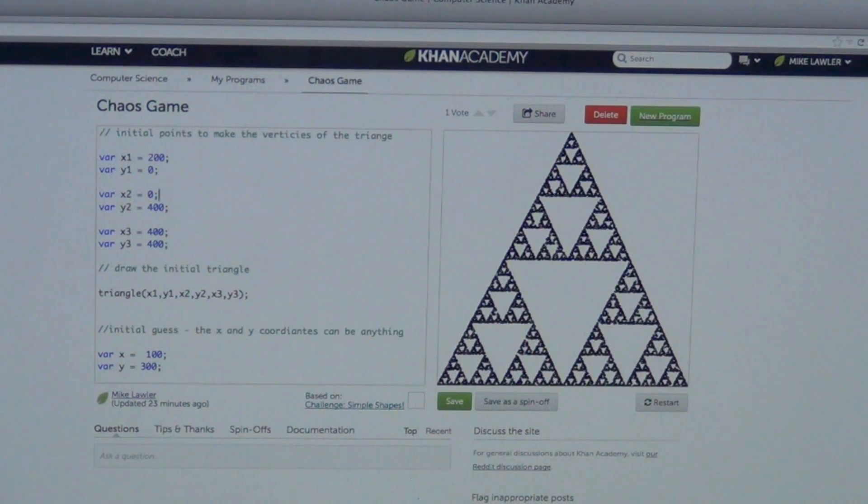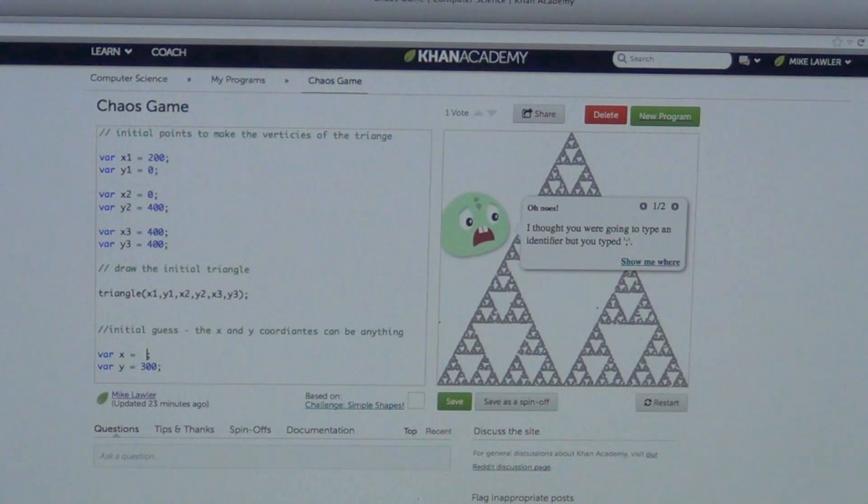All right. But it's kind of like... Maybe we should pick a different starting point. Maybe it was just luck. Maybe it was just luck. But pick a point to start at other than 100, 300. Let's do 390. 390. Now, the cool thing about that is that's not even in the triangle, right?